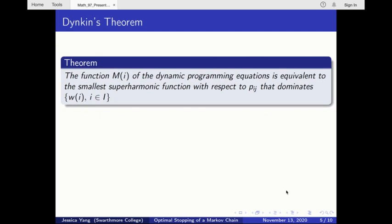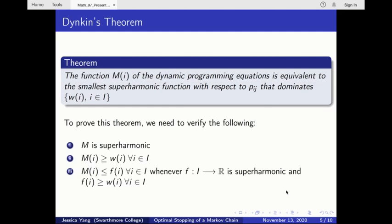The theorem that precisely characterizes m was originally formulated by Soviet mathematician Dinkin. Here is his theorem, which says m is the smallest superharmonic function with respect to the Markov chain's transition probabilities, and that is always greater than or equal to the reward function. To prove this, we need to show that m is superharmonic, mi is always greater than or equal to the reward of state i, and if f is any other superharmonic function that dominates the reward function, m is always less than or equal to f.